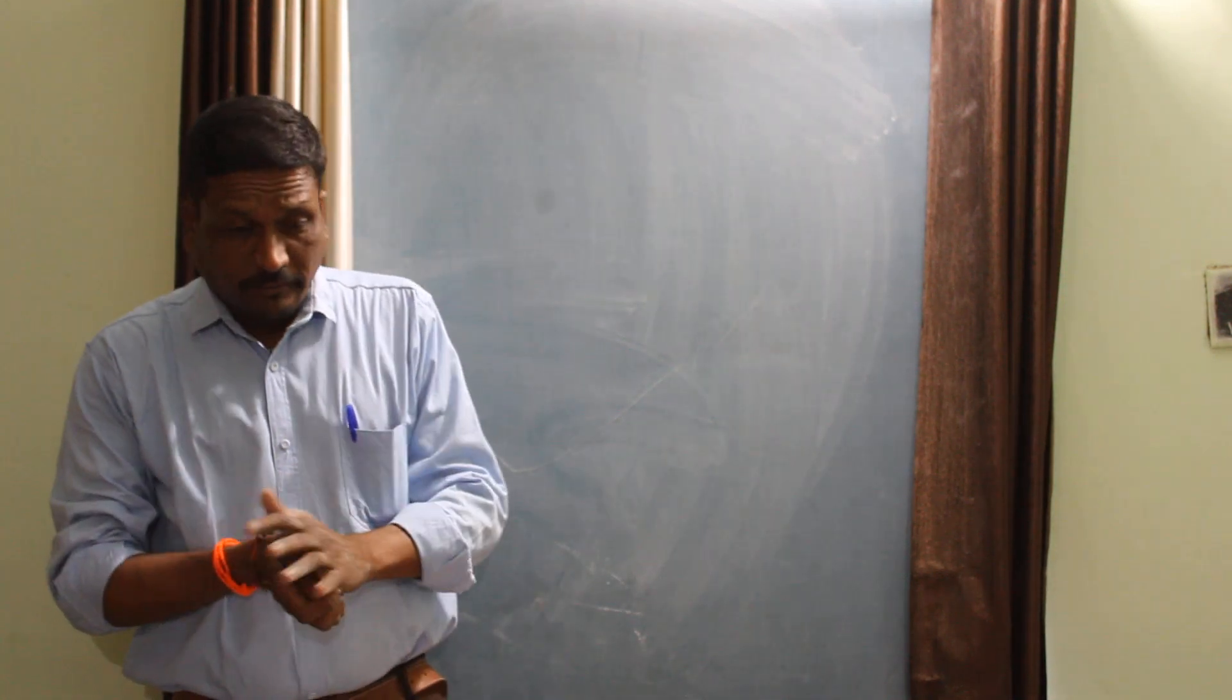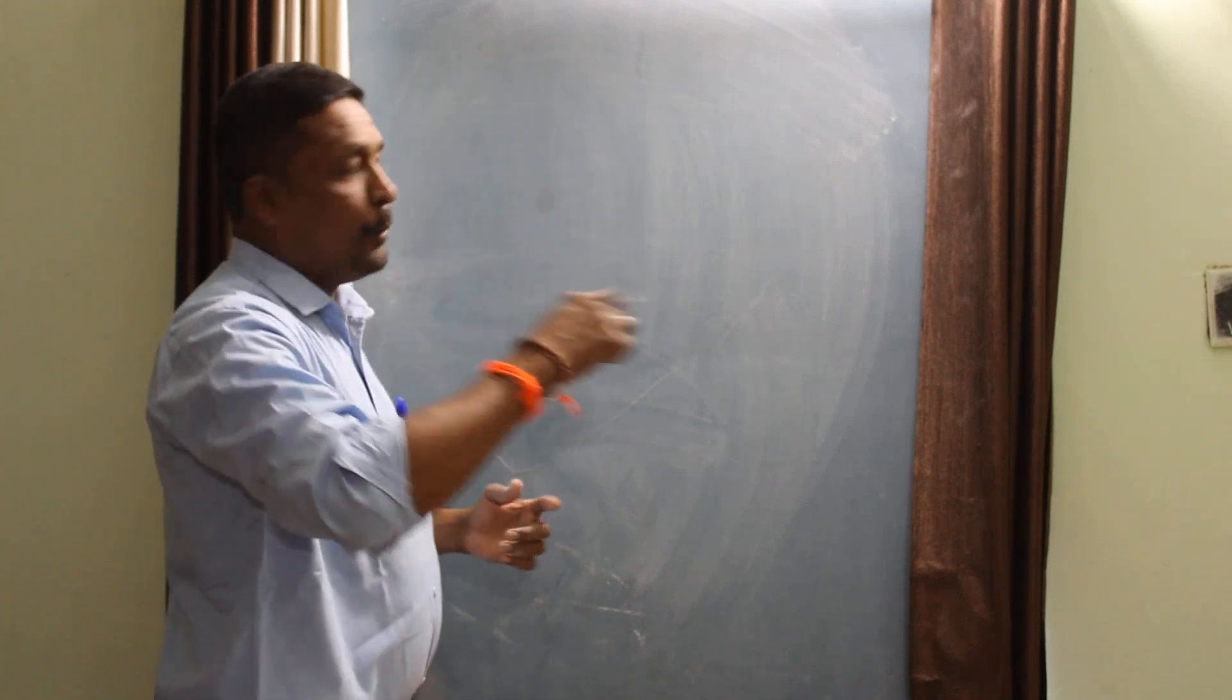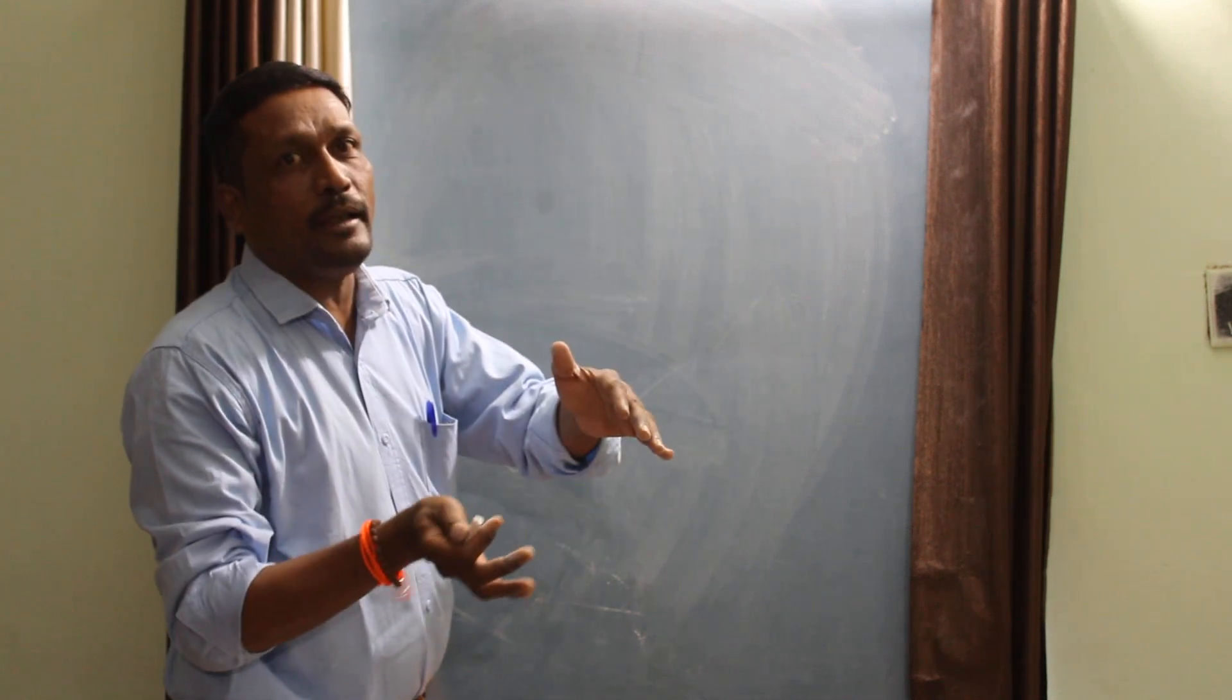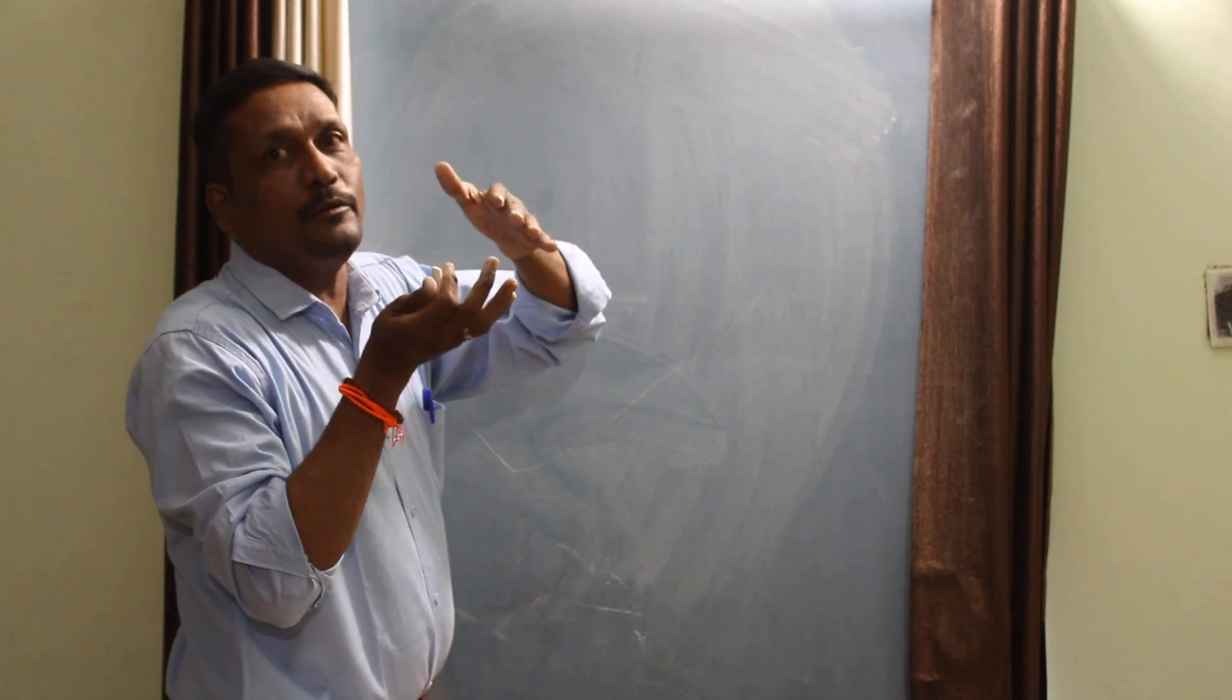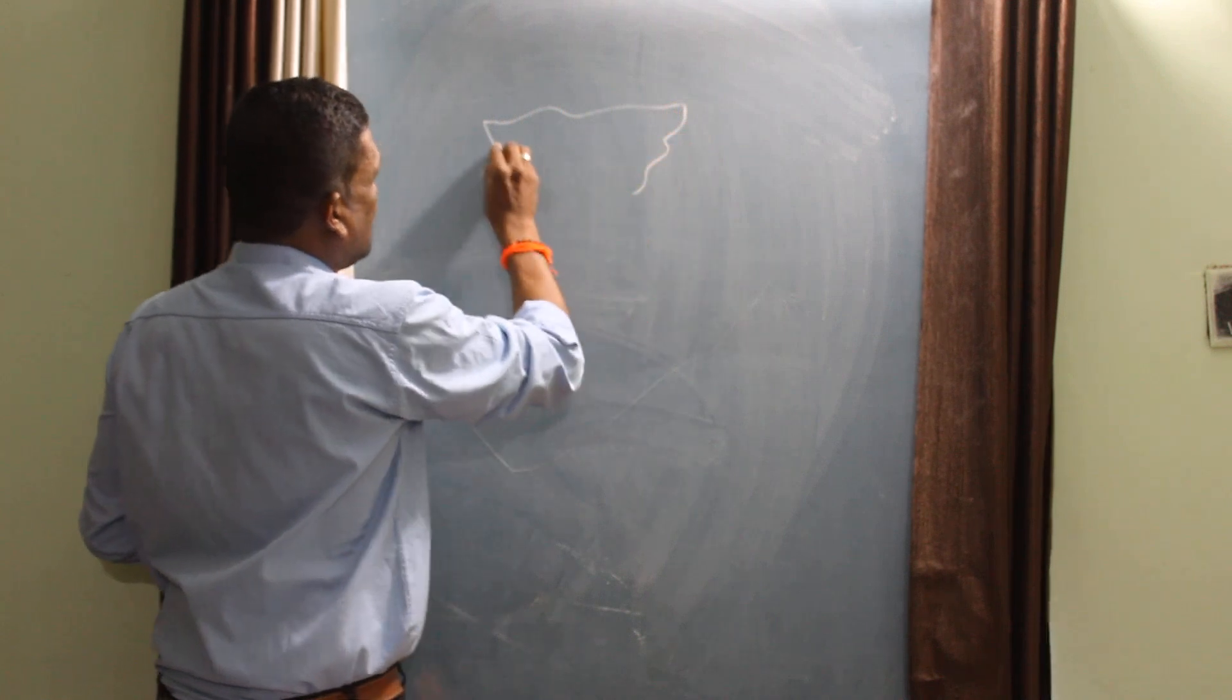Welcome again to second session. In the first session we have just seen world globe, UK, and where India was. Now we will see India only, the important latitudes which are divided in India, rough map of India.